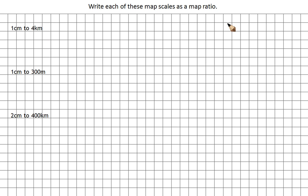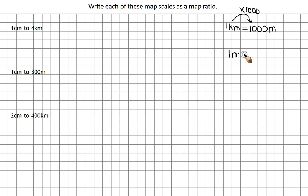To do that I need my metric conversions. I should know that 1 km is 1000 m. To get from km to m — to get from 1 to 1000 — I need to times by 1000. And we also know that 1 m is 100 cm. To get from 1 to 100, we times by 100.